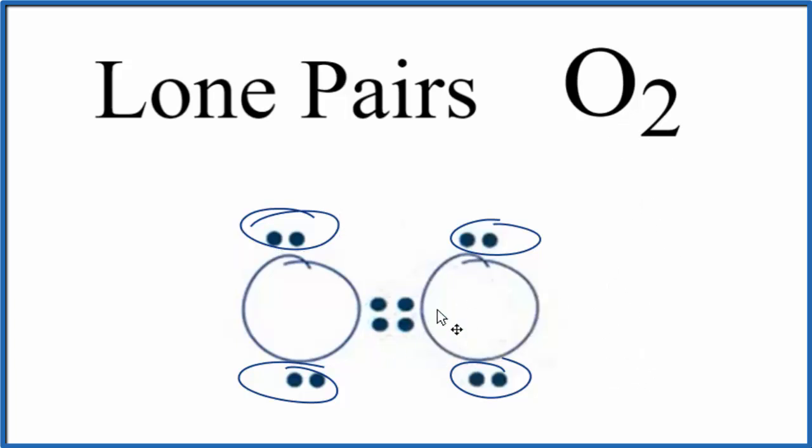Often for the bonding pairs, we'll see them represented with lines. So here, each line represents a pair of electrons that are involved in the chemical bond, and we have a total of four electrons, two pairs.